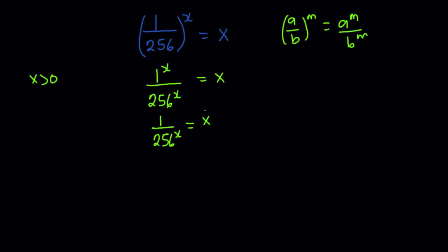I'm going to cross multiply, and I'll end up with 1/x = 256^x.